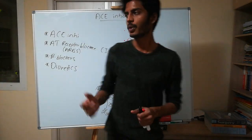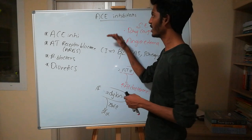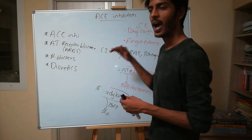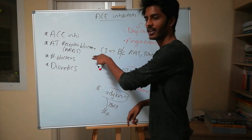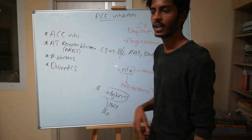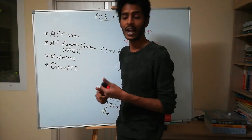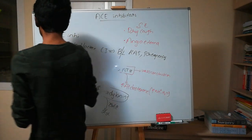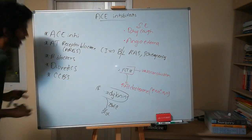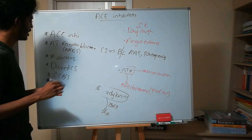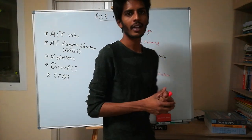I will make further videos about angiotensin receptor blockers. There is already a video about beta blockers, a video about diuretics, and I have already uploaded a video about calcium channel blockers, which are also used as first-line treatment for hypertension. This is the story of ACE inhibitors — thank you, keep watching.